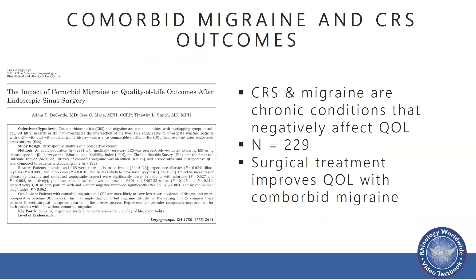Dr. Takande et al. looked at migraine. Many patients who present to us in clinic have a complaint of headache or a comorbidity diagnosis of migraine. Little research has looked at how these two conditions intersect, although both have significant effects on overall quality of life. In 229 patients prospectively enrolled, the authors found that surgical treatment improves quality of life in patients with comorbid migraine, demonstrating that migraine did not negatively affect the patient's improvement in CRS following surgery.